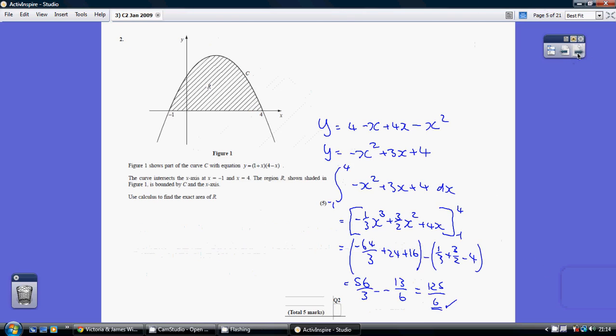Question 2. So, start off by multiplying out the brackets: 1 times 4, 1 times minus x, x times 4, x times minus x, gives us this.